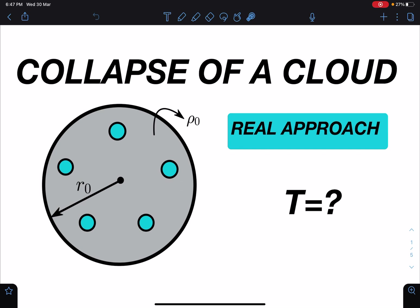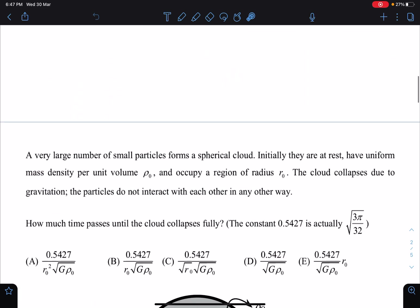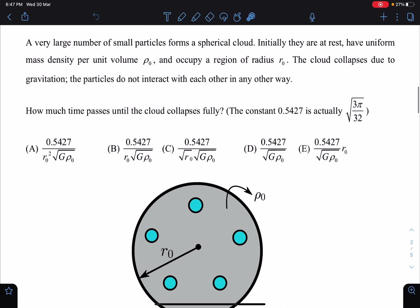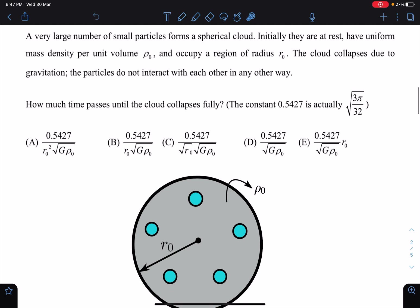Many viewers and students were requesting the actual solution of this collapse of a cloud because last time when we discussed this problem I gave it in the paper with four options where we could easily eliminate using dimensional analysis. This is the problem statement and you can see the actual form of the question was in this manner.